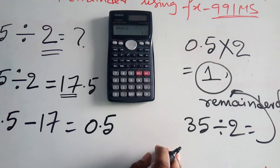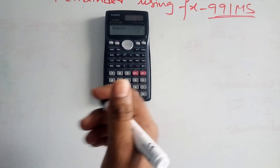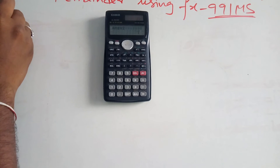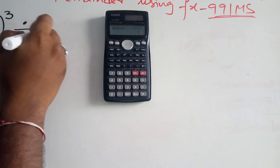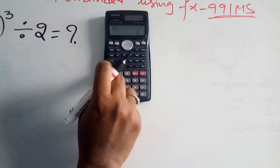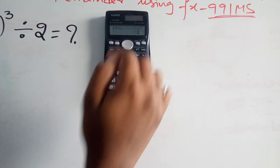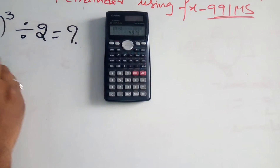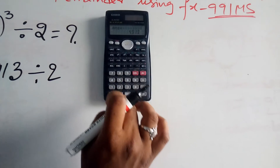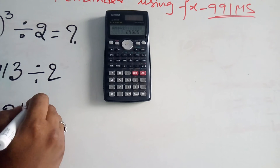Third example: how to find the remainder of bigger numbers. Suppose 17 to the power 3 divided by 2 — what is the remainder? Simply use the calculator. Press 17, then the caret symbol, then 3, press equal — you get 4913. Then divide by 2, press equal — you get 2456.5.